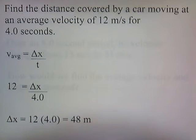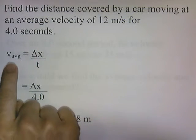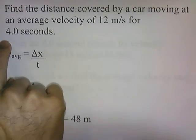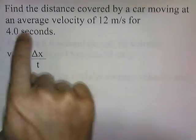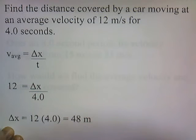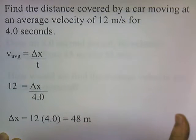Find the distance covered by a car moving at an average velocity of 12 meters per second for 4 seconds. Here's our formula: average velocity equals distance divided by time. The average velocity is given as 12, the time elapsed is 4 seconds. Solving for x, you multiply both sides by 4, and 12 times 4 gives you 48 meters.